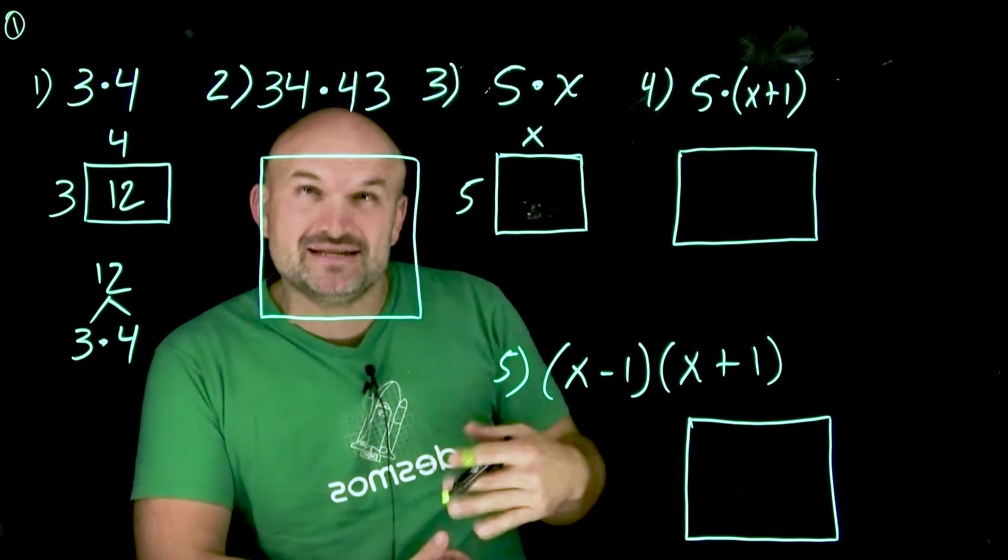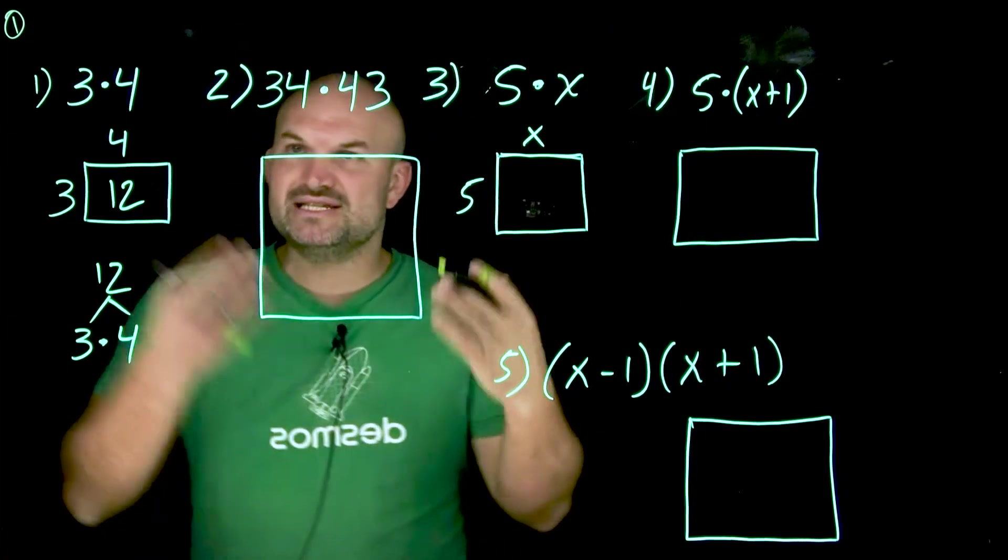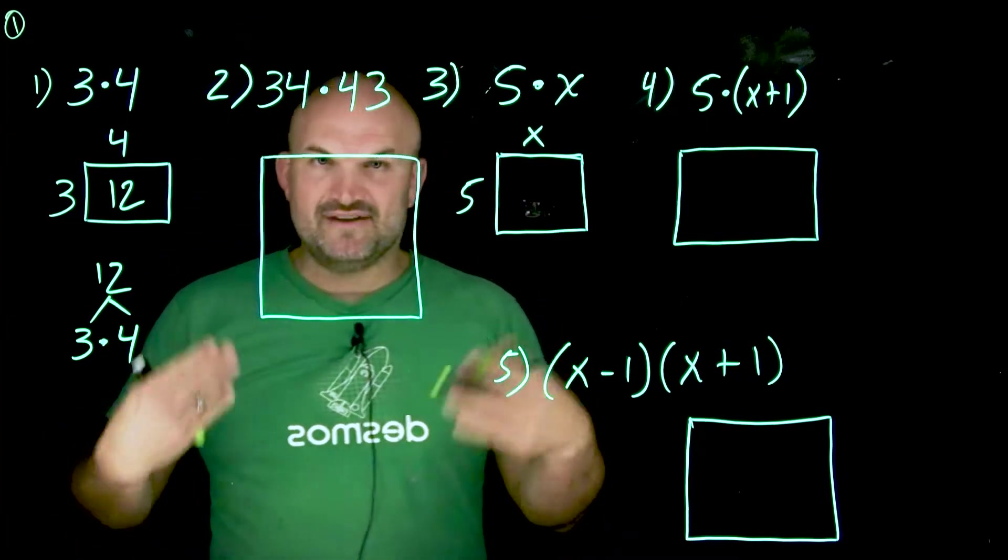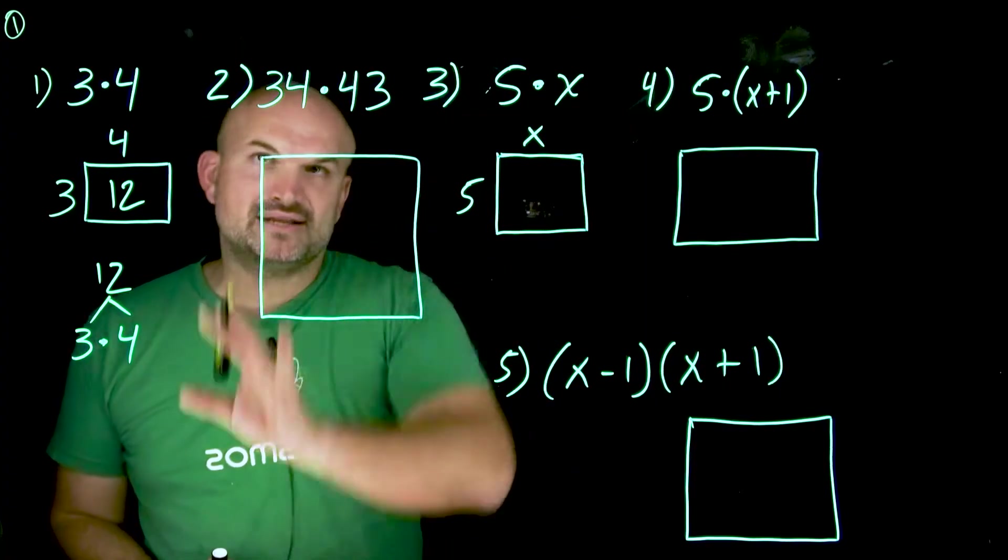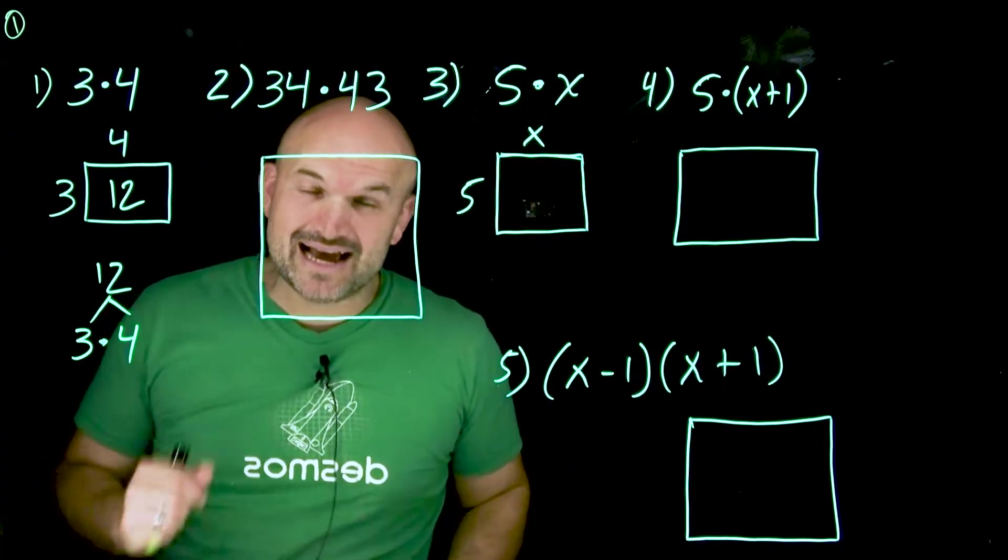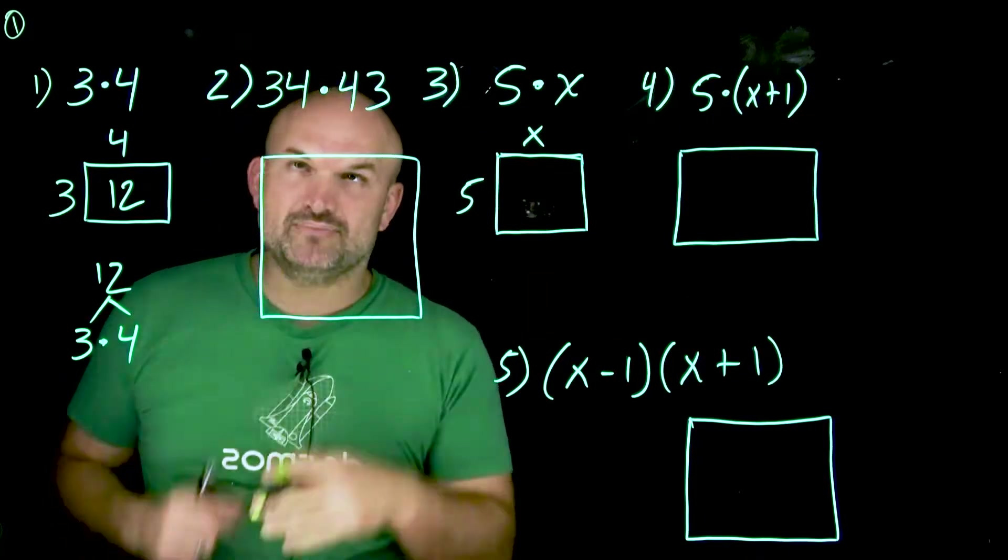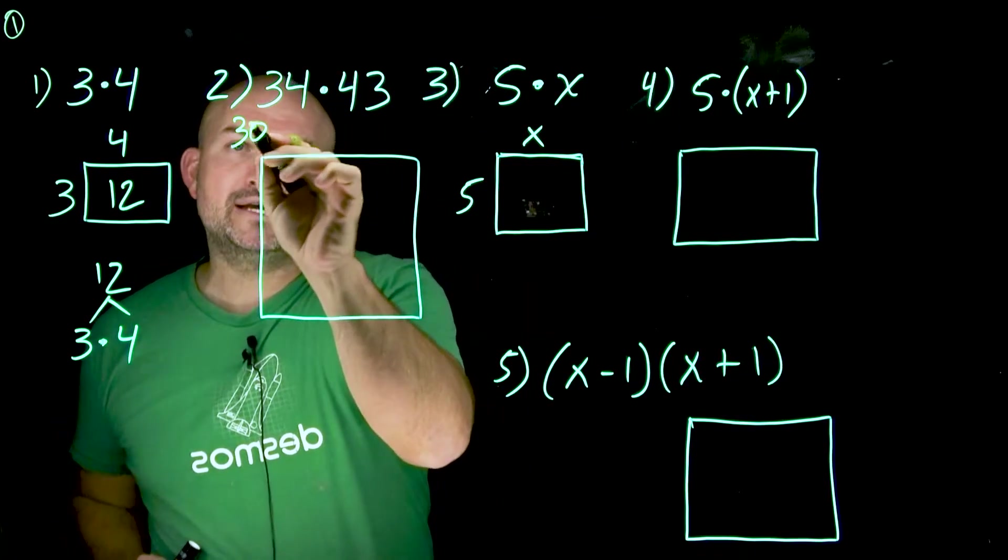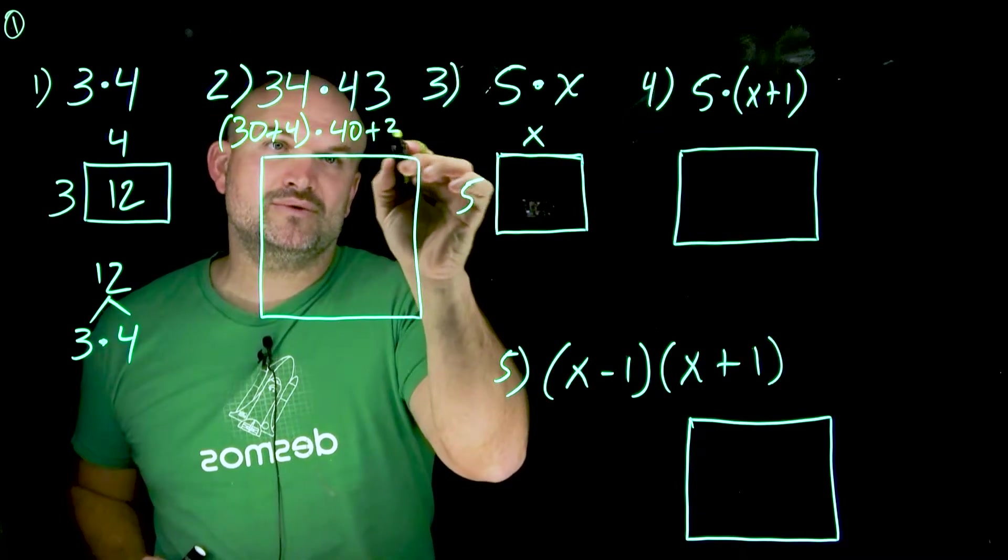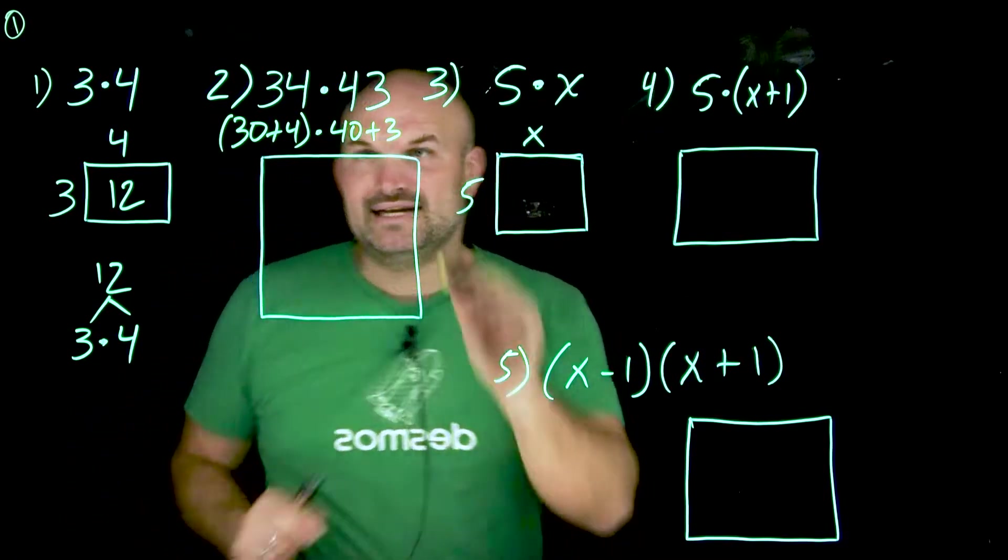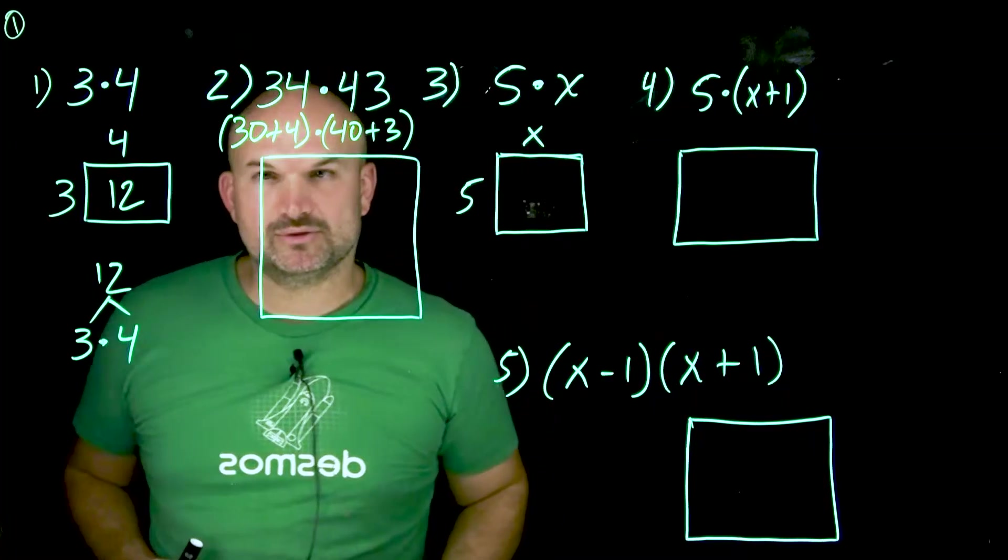I still remember it because it was ingrained in me. But I think it's really important. If we use this concept of to multiply is to find the area, then what we can do is visualize, well, how can I break this up? 34 times 43. I have no idea what that is. However, by breaking this down into a 30 plus 4 times a 40 plus 3, I can get a better understanding of how to represent this multiplication.